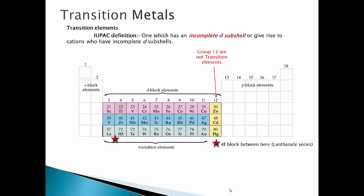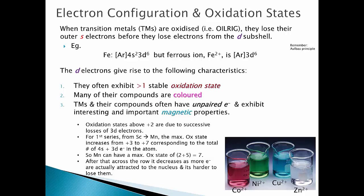The IUPAC definition for transition elements are ones that have an incomplete D subshell. This does not include group 12 elements that have a complete D subshell, or they give rise to cations that have incomplete D subshells. Transition metals generally can pick up different charges depending on what environment they're in. Of these transition metals, we have the first, second, and third series, and mostly we talk about our first series.